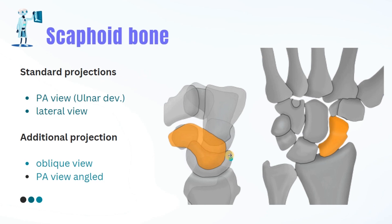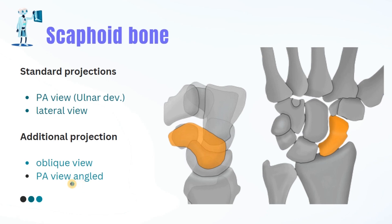The two standard projections for scaphoid studies are the PA view with the hand flexed towards the ulna bone, and the lateral view. The two additional projections are the oblique view and the PA axial view, which may be helpful to evaluate scaphoid injuries. Remember, scaphoid fractures are likely not to be seen on a normal PA and lateral projection, so implementing the specialized technique will help the physician rule out any injury or fracture in the scaphoid bone.